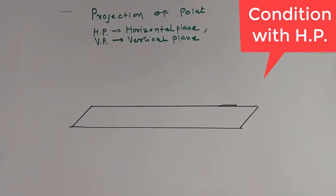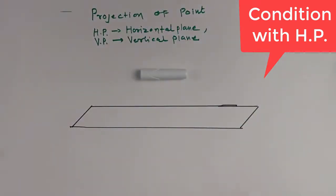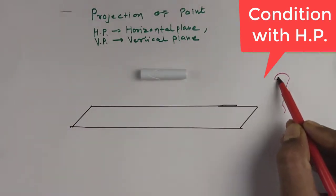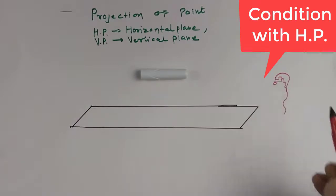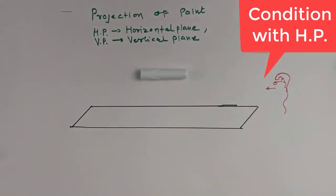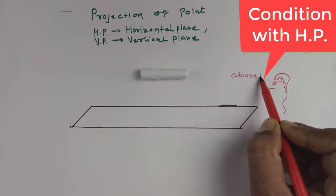Now I place one object here, and our observer is here. So this is an observer looking at the object. The object is above HP.